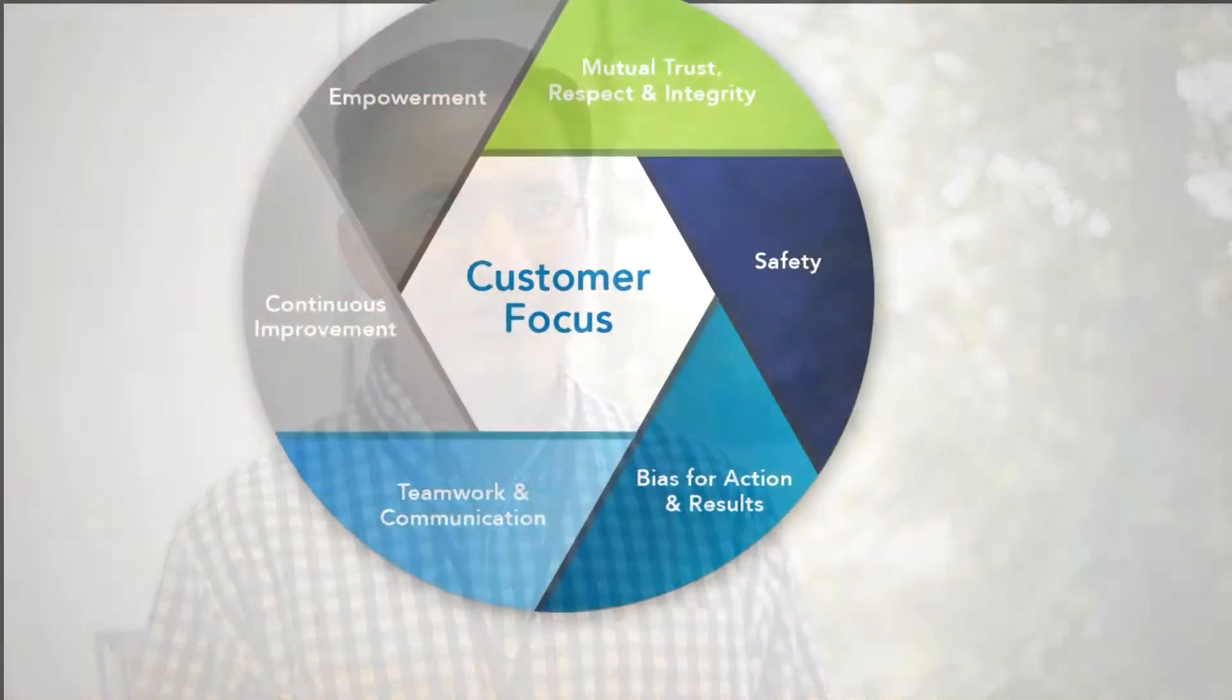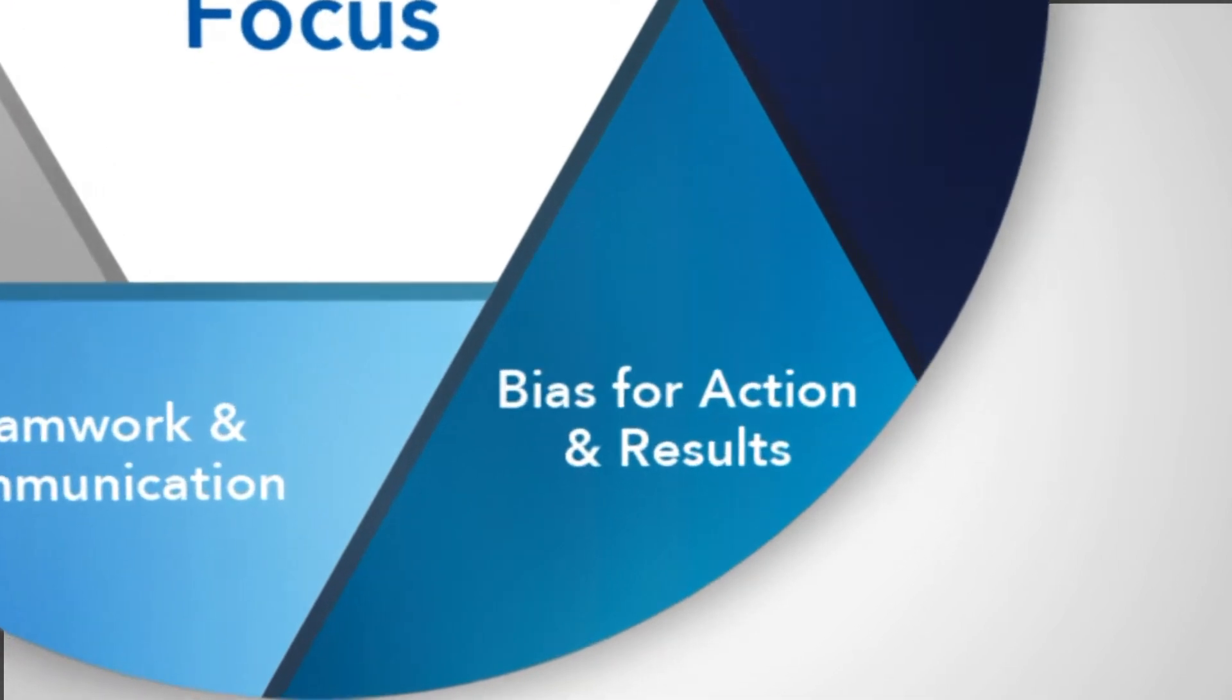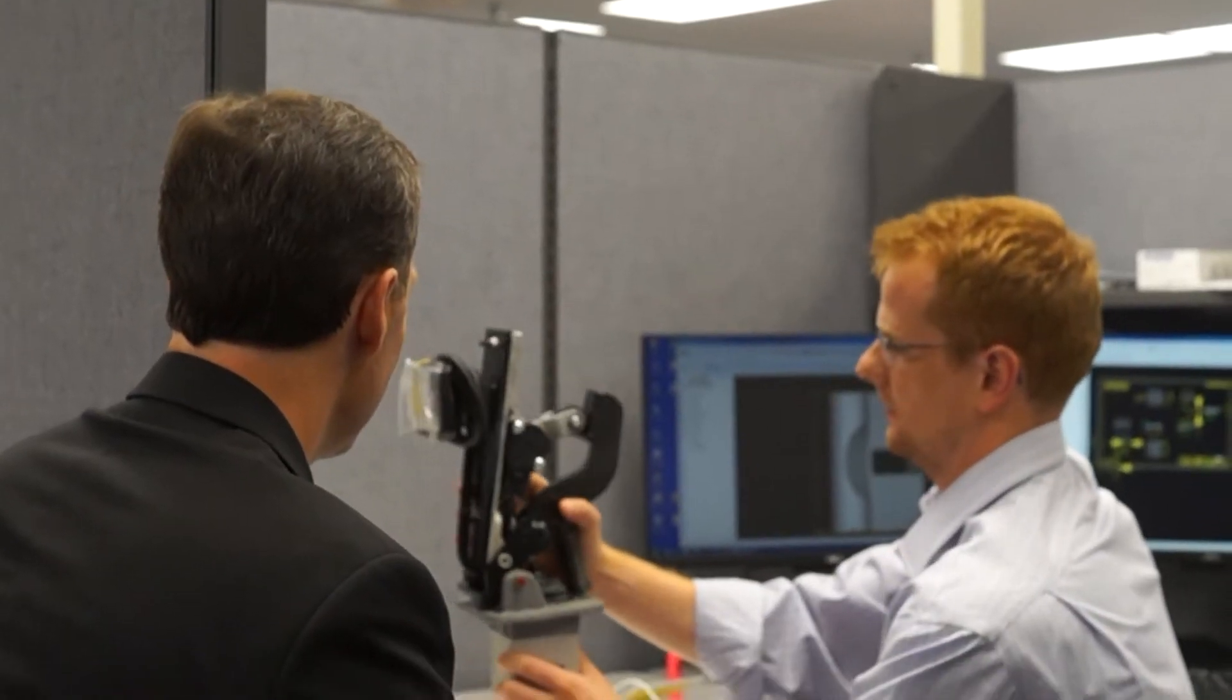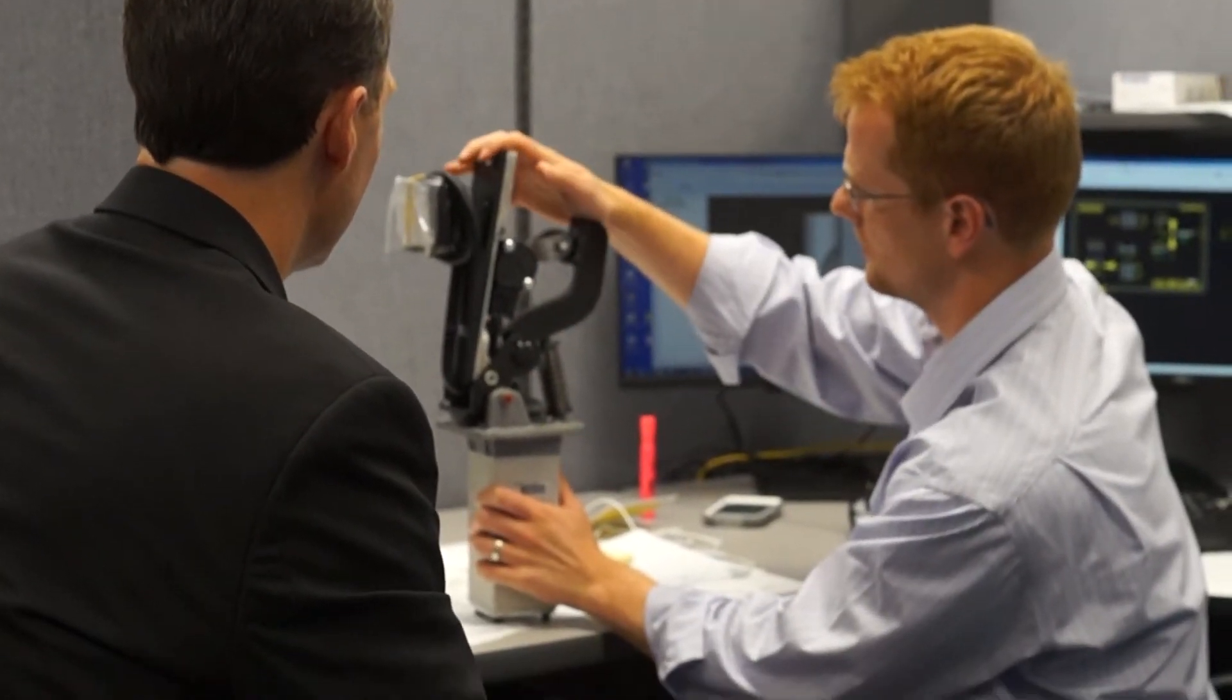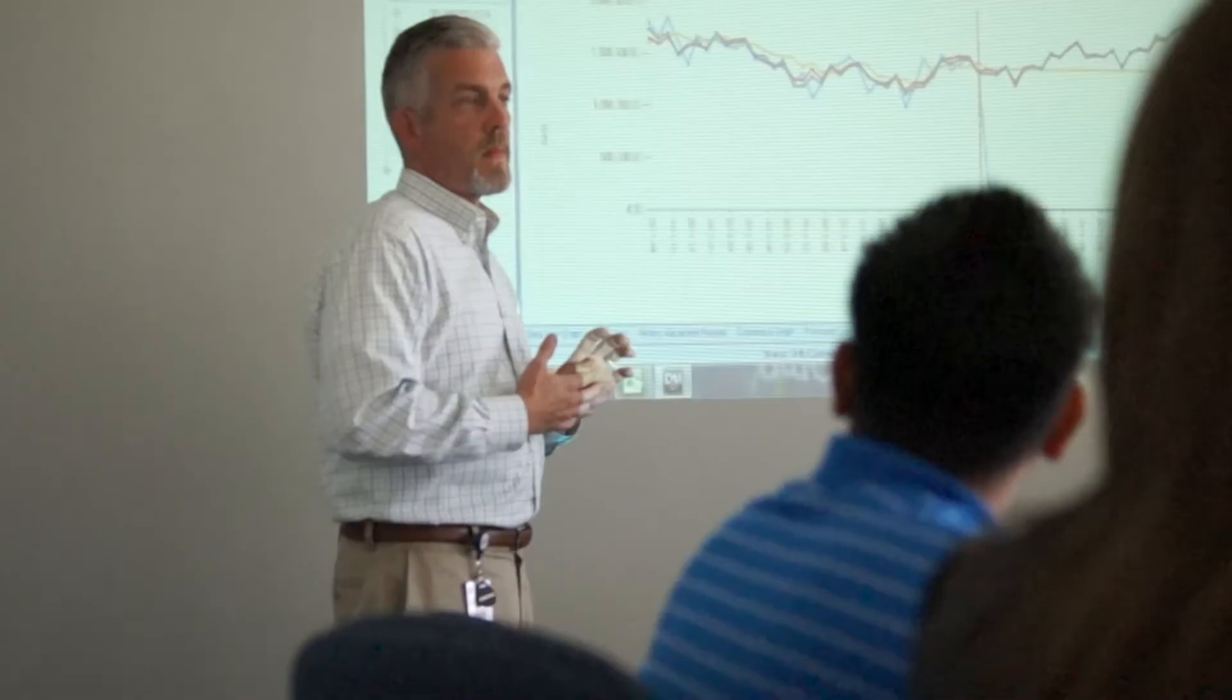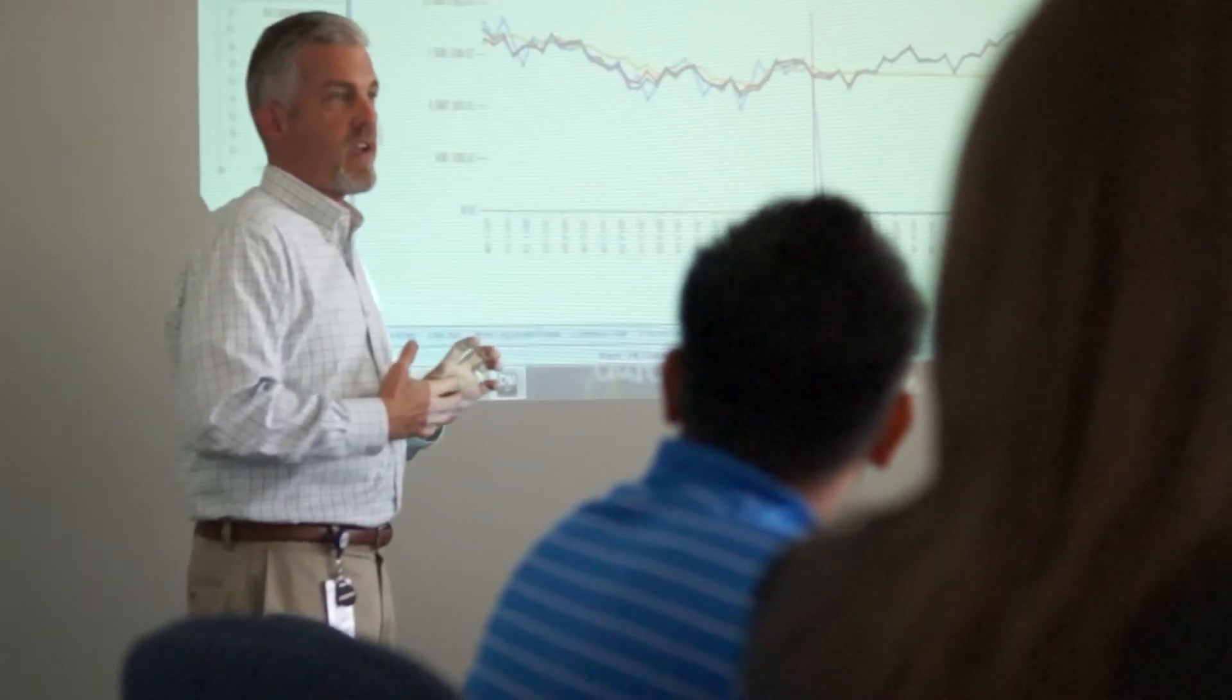Bias for action just comes from the fact that you cannot steer a parked car. You've got to have momentum and action. We have to have a proactive approach to things and not be passive and wait for direction. So we want to have people who are in constant motion and looking for new and better ways to do things and get results.